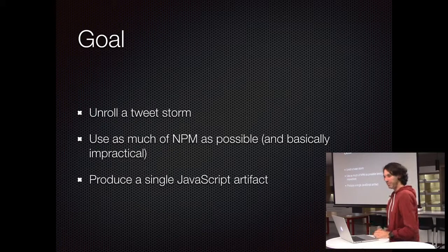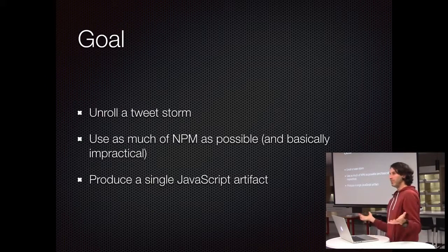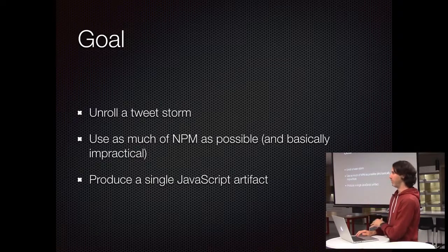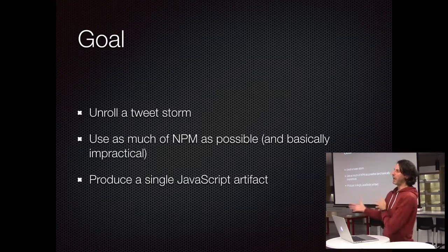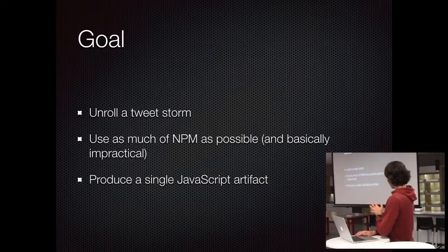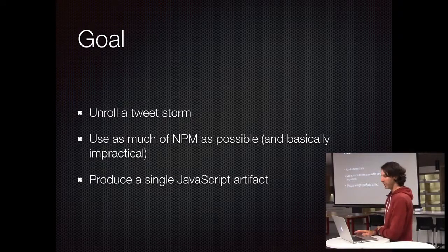What I want to show you — which turned out to be non-trivial — is unrolling a tweet storm. I'm sure everybody's familiar with what a tweet storm looks like. I also want to use as much of NPM as is possible, and in this case it's actually impractical, but I want to show how this different language is still a good player in the ecosystem. And as part of our exercise, we're going to produce a single JavaScript artifact that you can just take out and use with Node.